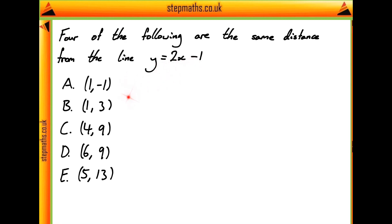And we're given these five different points, of which we're told that four of the following are the same distance from this line, and one of them is a different distance. So all the question asks us to do is to find which of these points is a different distance from our line.